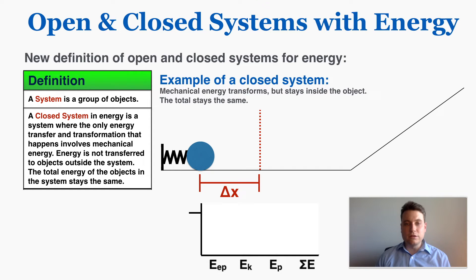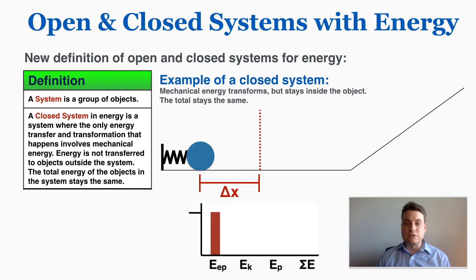A very common example of a closed system in energy is a ball compressing a spring. Because of the compression of the spring, the ball has a certain amount of elastic potential energy and no kinetic or gravitational potential energy. So the total energy of the ball is all elastic potential energy, which is a type of mechanical energy.